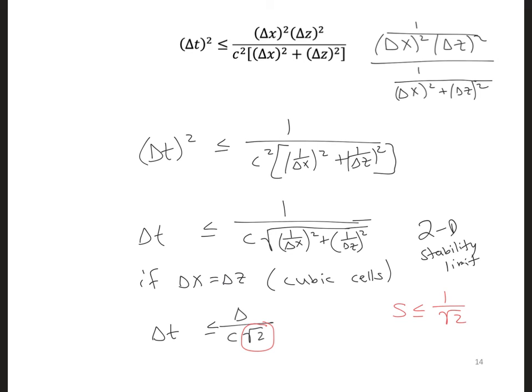So now go ahead and try setting s just below this limit. So set s equal to 0.99 times 1 over square root of 2. And in your two-dimensional FDTD code, and let's see.